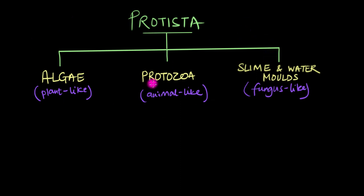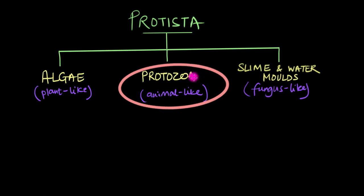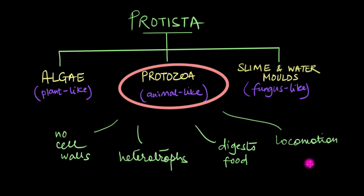In this video, we are going to explore the world of animal-like protists, a.k.a. the world of protozoa. Essentially, all protozoans are unicellular eukaryotes which share some similar characteristics with animals. These characteristics include things like the absence of cell walls, their heterotrophic nature, and certain abilities like digesting food and moving from one place to another.